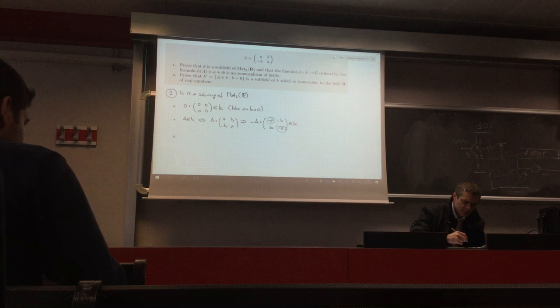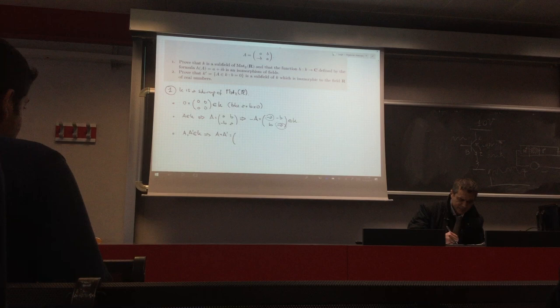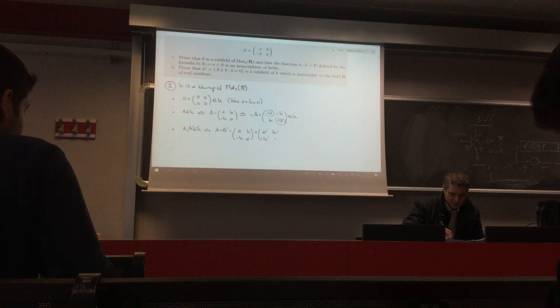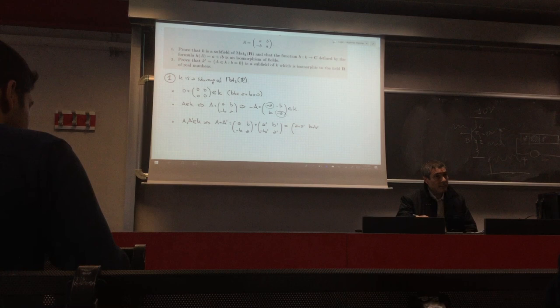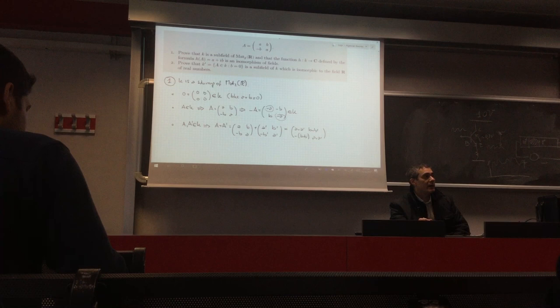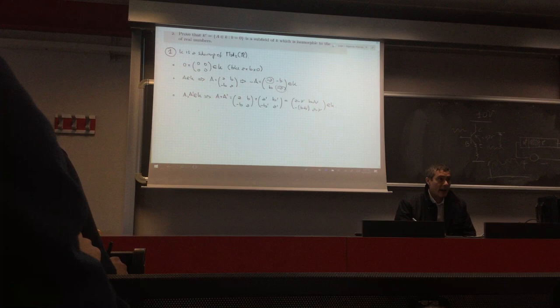For closure under addition, suppose A and A' are in K. Then A + A' is the matrix (A+A', B+B'; -(B+B'), A+A'). The elements on the diagonal are the same, and the element in position (2,1) is the opposite of the one in position (1,2). Therefore this is again an element of K, so K is closed under the additive structure.